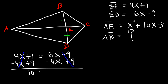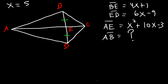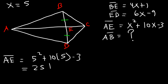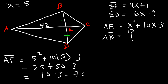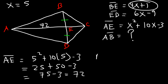Subtracting 4x from both sides and adding 9 gives 10 equals 2x, so x equals 5. Now we calculate AE: x² plus 10x minus 3 equals 25 plus 50 minus 3, which is 72. Then BE equals 4 times 5 plus 1 equals 21.